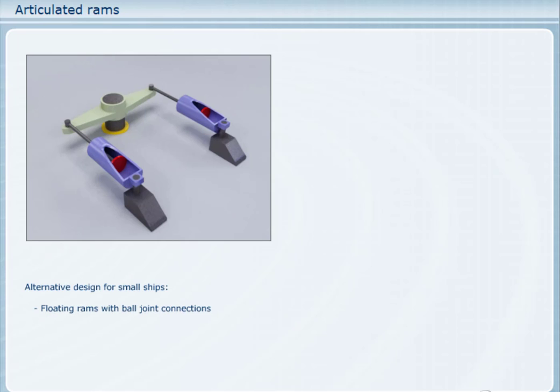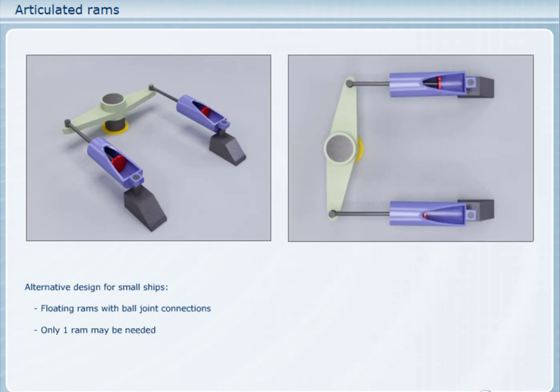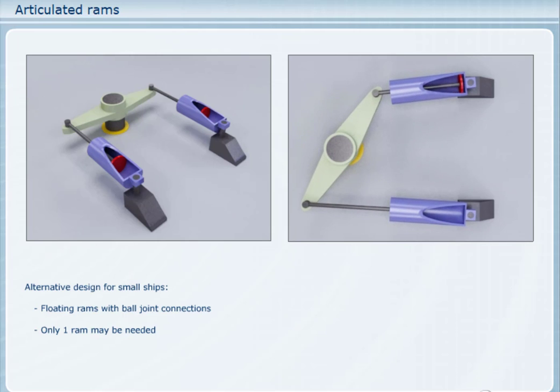Smaller ships sometimes use floating rams which have ball joints at each end to operate the tiller. The ball joints are needed because the positions of the rams will change as the tiller rotates. On very small ships, only one double acting ram or two single acting rams may be used to steer the ship. The design allows more freedom in layout, but the main problem is that the hydraulic connections to the rams must also be flexible, usually requiring flexible hoses, which do not last as long as the solid pipes used with rams using a Rapson slide.